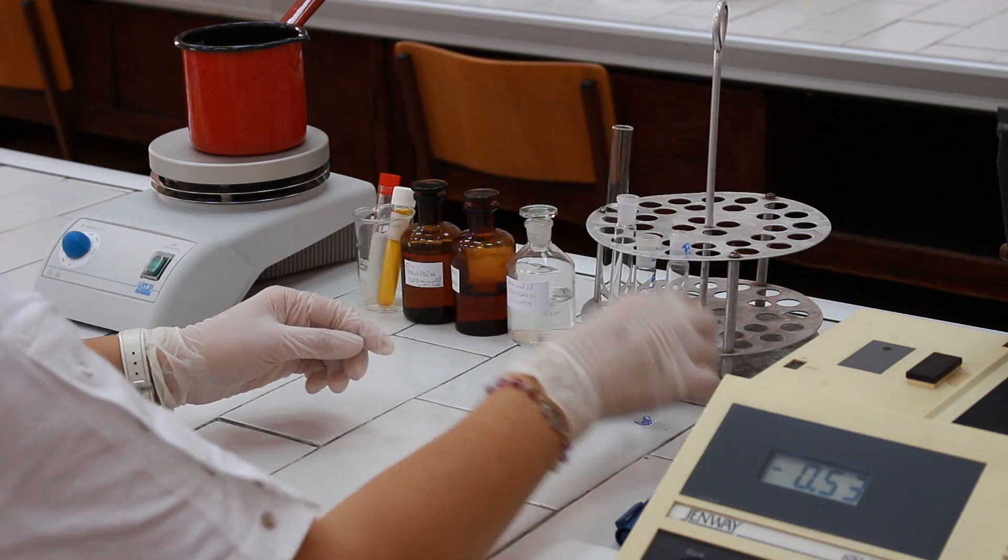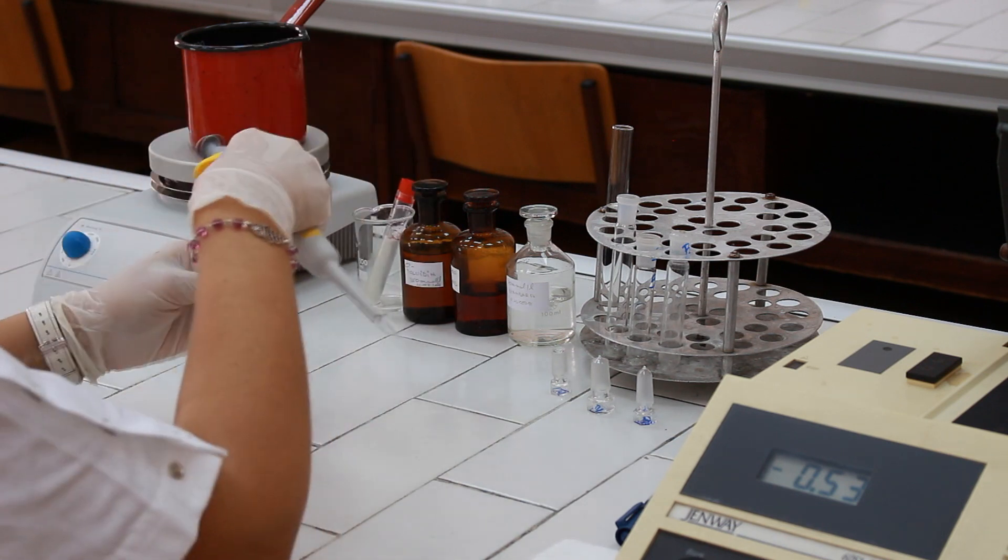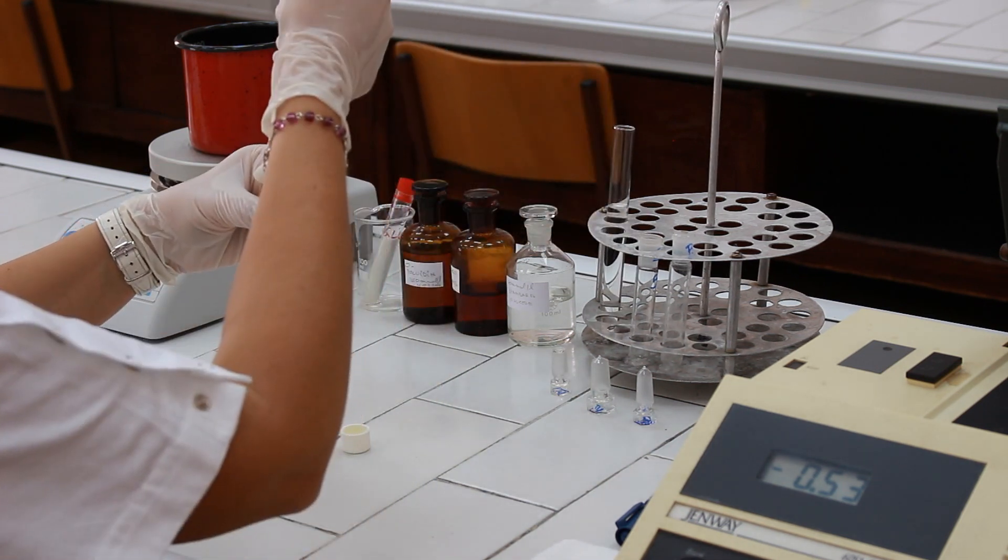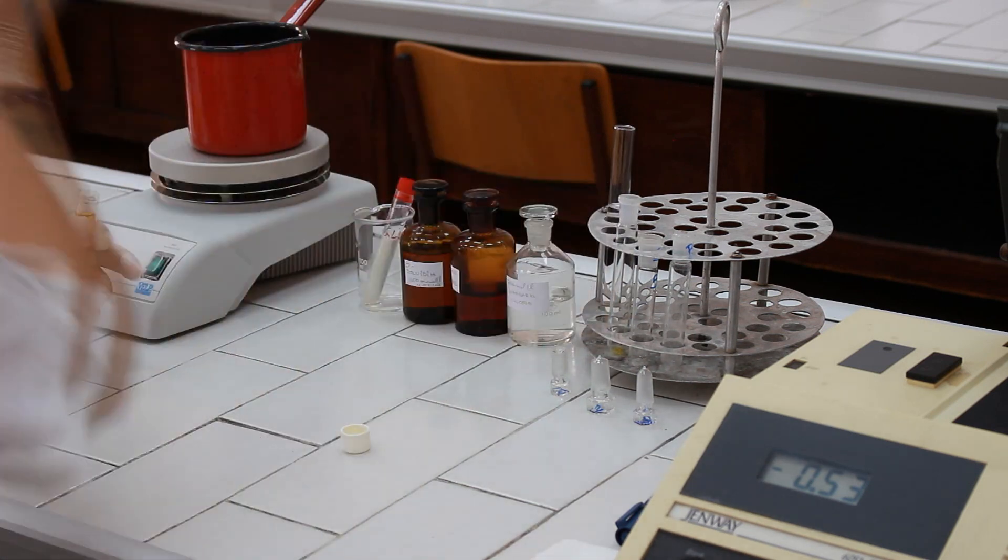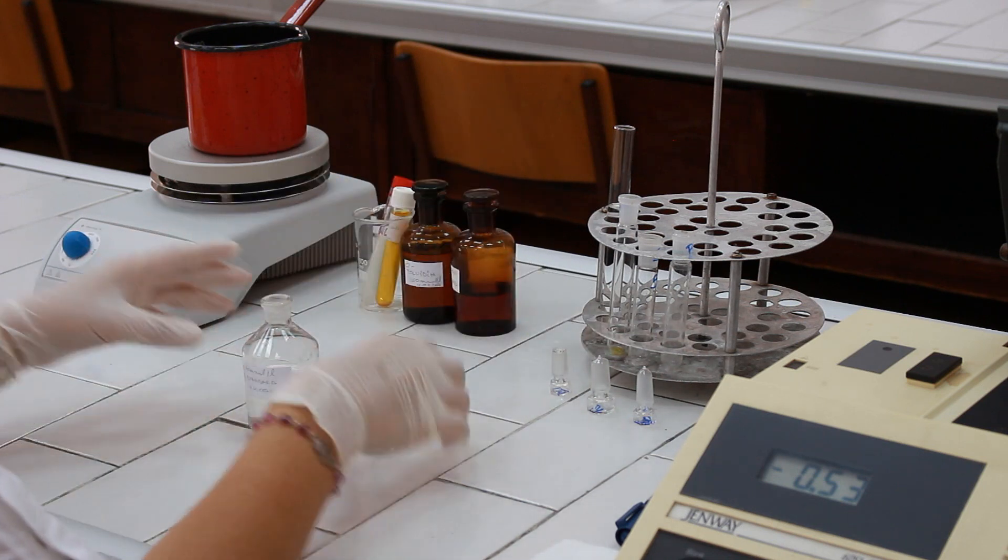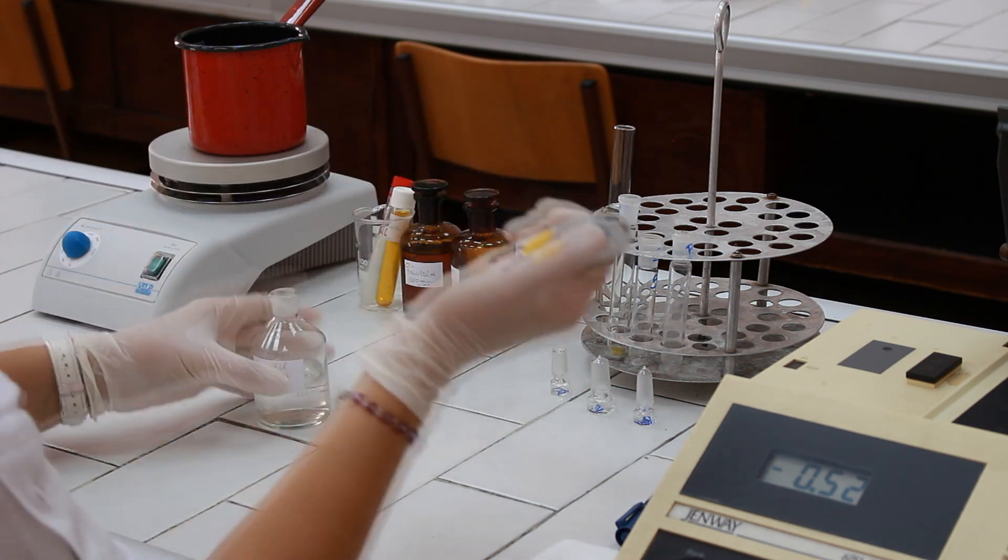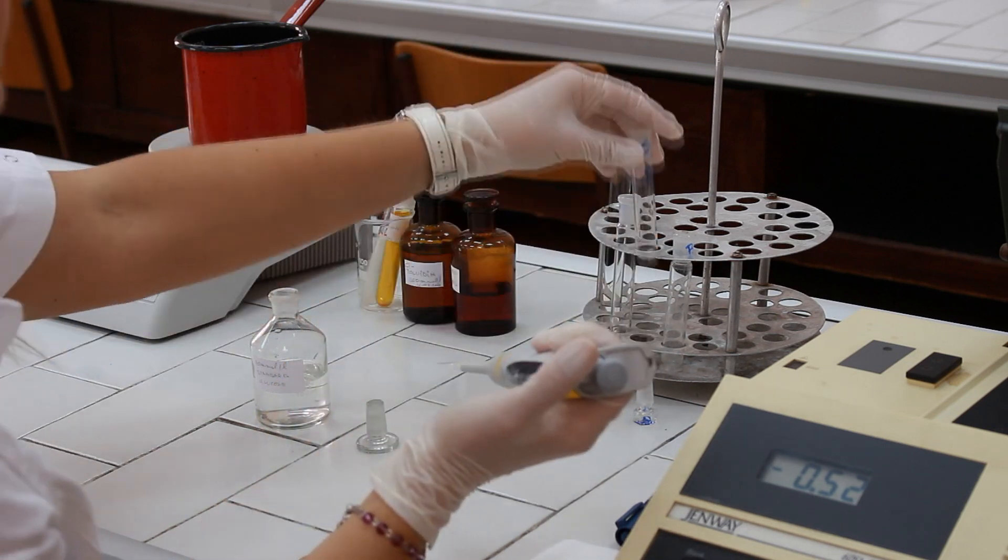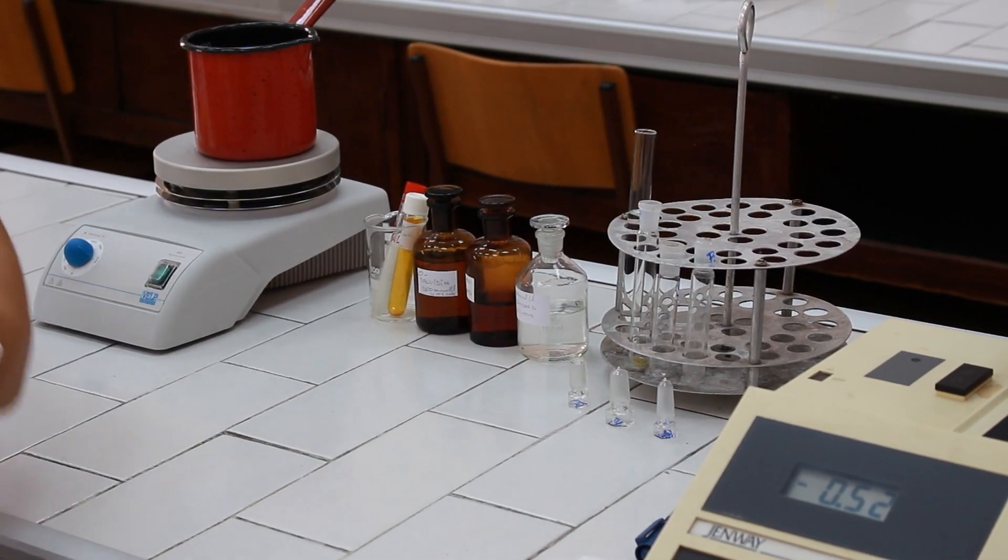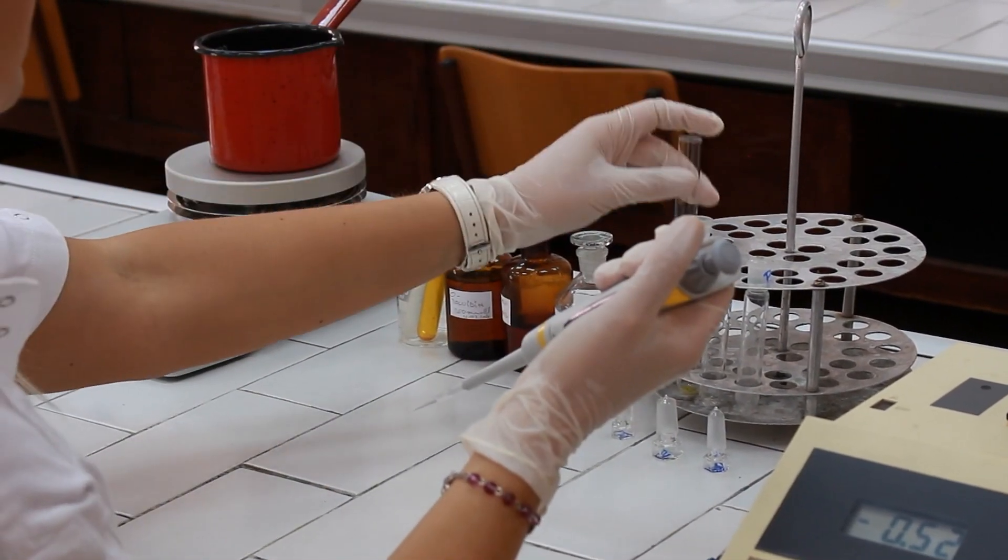Now we need to pipette 50 microliters of blood serum to the test tube T. Then, standard solution of glucose, 50 microliters in test tube S. And distilled water, the same volume, 50 microliters, in test tube blank.